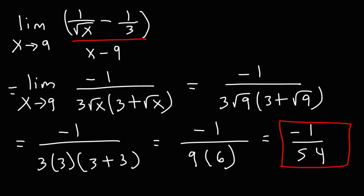And if you want to, you can check this answer. Negative 1 over 54 as a decimal, that's equal to negative 0.0185 repeating.